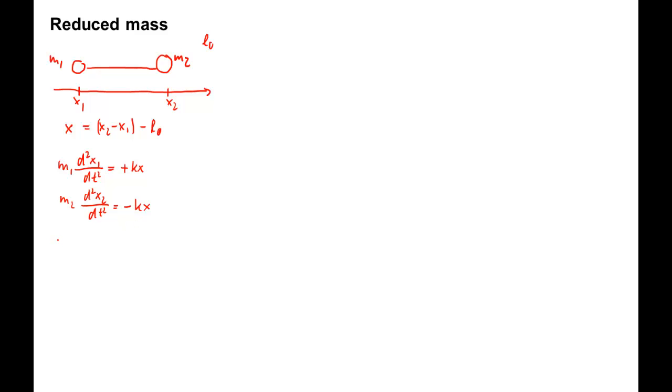Let's multiply each equation by the other mass and then subtract the first equation from the second equation. We get m1 m2 d squared of x2 minus x1 over dt squared equals minus m1 kx from the second equation, minus m2 kx from the first equation. We can factor k and x out and we get m1 plus m2 as an additional factor on the right-hand side.